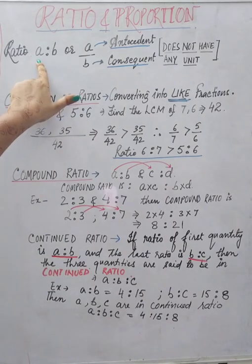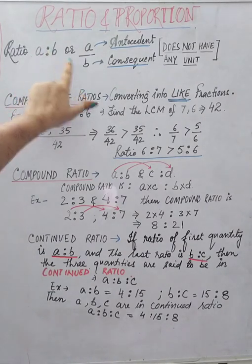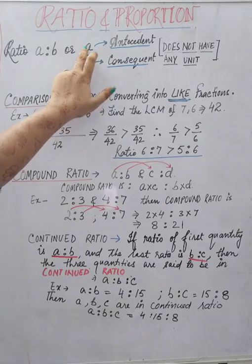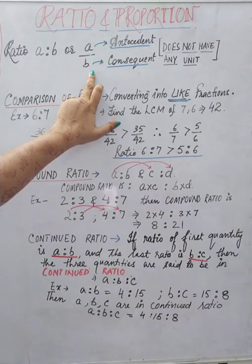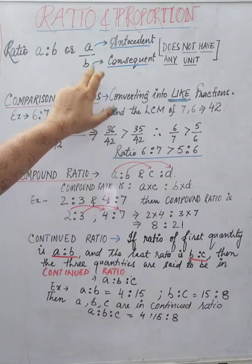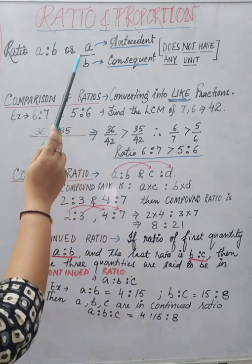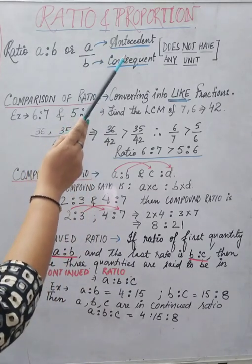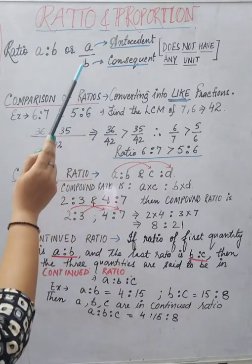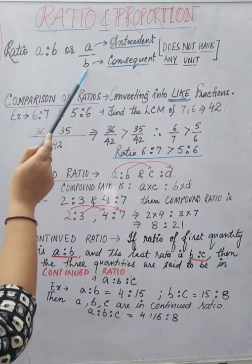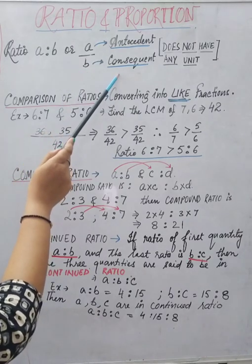The representation of a ratio is in the form of a colon b. When we write it as a is to b, the numerator part or the a part is known as the antecedent, and the denominator part b is known as the consequent.